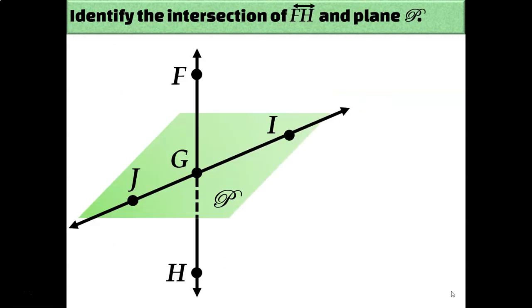Let's look at the intersection of a plane and a line. So we've got a lot going on in this diagram, but what I want you to focus on for this one is where does the vertical line, FH, cross through that two-dimensional plane called P? And that answer would be point G.